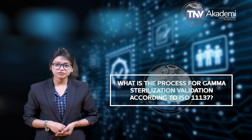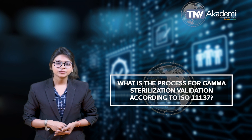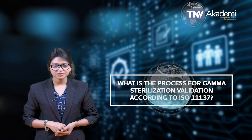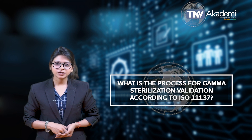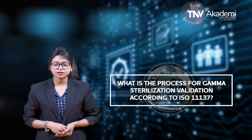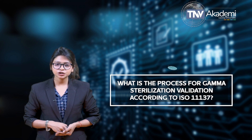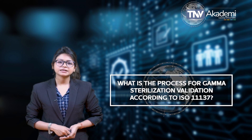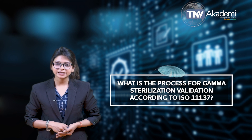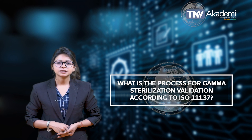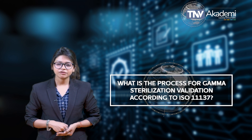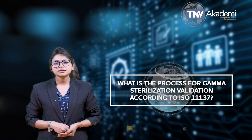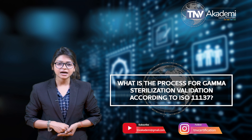A maximum dose must be established and not exceeded during gamma sterilization because gamma rays have the potential to break down the polymers used in many single-use medical devices that require sterilization. ISO 11137-2 offers three related methods for establishing a radiation dose that meets both requirements. The first two methods involve determining the natural bioburden — the number of microorganisms on a product — and verifying the appropriate dose via sterility testing.